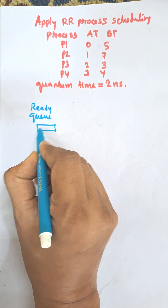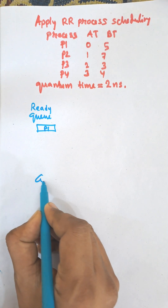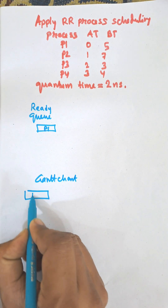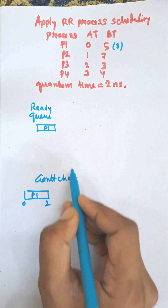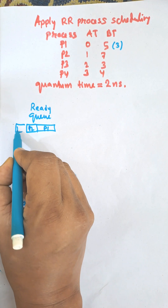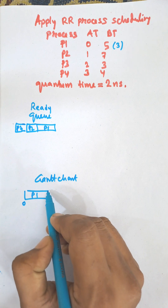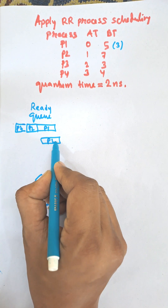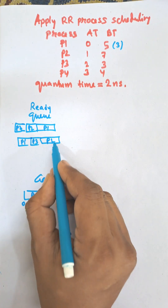Initially P1 has arrived and the CPU will draw the Gantt chart. It will execute P1 for two nanoseconds, so the remaining time is three. Then during this period P2 arrived and P3 also arrived in the ready queue. After P1 executes, it goes to the end of the queue, making the order P2, P3, P1, and then P2 will execute.